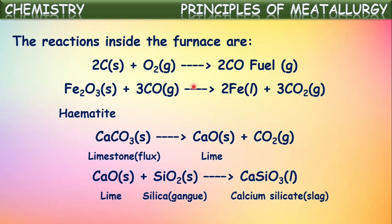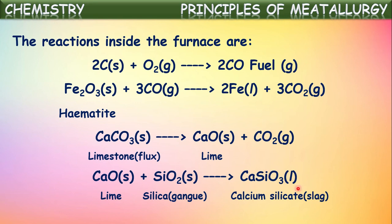Let us summarize the terminology: the component used to produce high temperature is called fuel — in hematite extraction, the fuel is coke. Calcium carbonate (limestone) is mixed as flux, which removes impurities like silica by combining with it as calcium oxide to finally form calcium silicate, which is the slag. The slag is removed in a separate channel. The impurity is called gangue; the component used to remove the gangue is called flux; and the combination of flux and gangue forms the slag, which is removed separately.